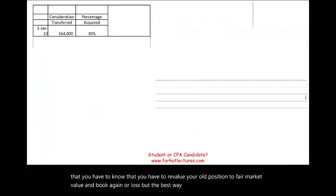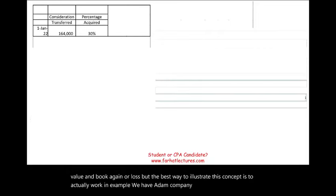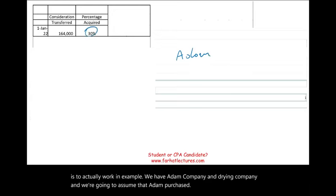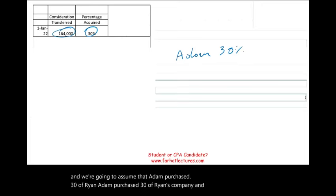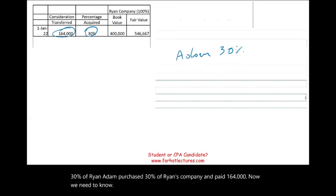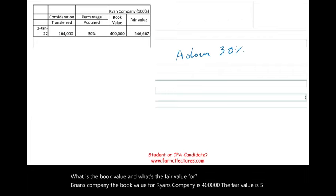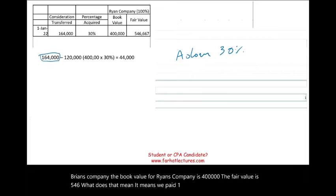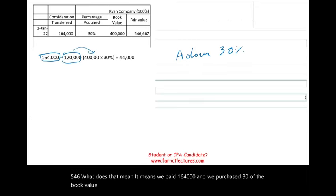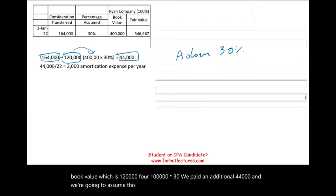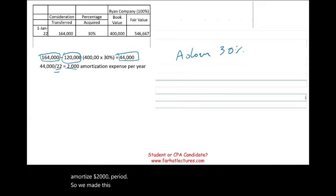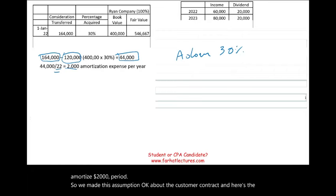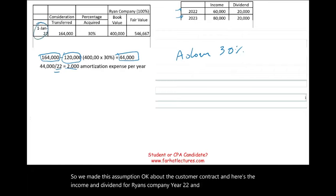The best way to illustrate this concept is to work an example. We have Adam Company and Ryan Company. Adam purchased 30% of Ryan's company and paid $164,000. The book value for Ryan's company is $400,000 and the fair value is $546,000. Adam paid $164,000 for 30% of the book value, which is $120,000 ($400,000 times 30%), paying an additional $44,000 allocated to a customer contract amortized over 22 years — $2,000 per year.